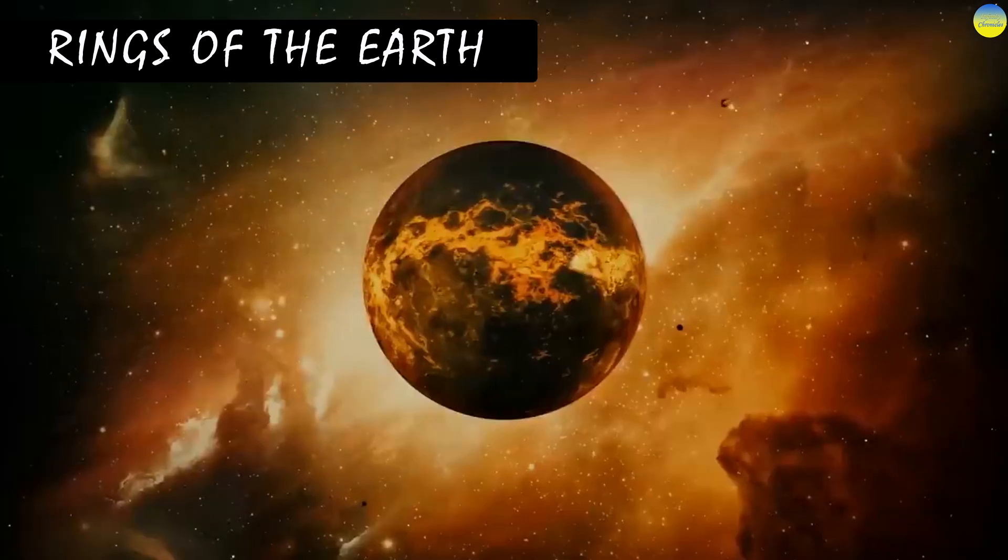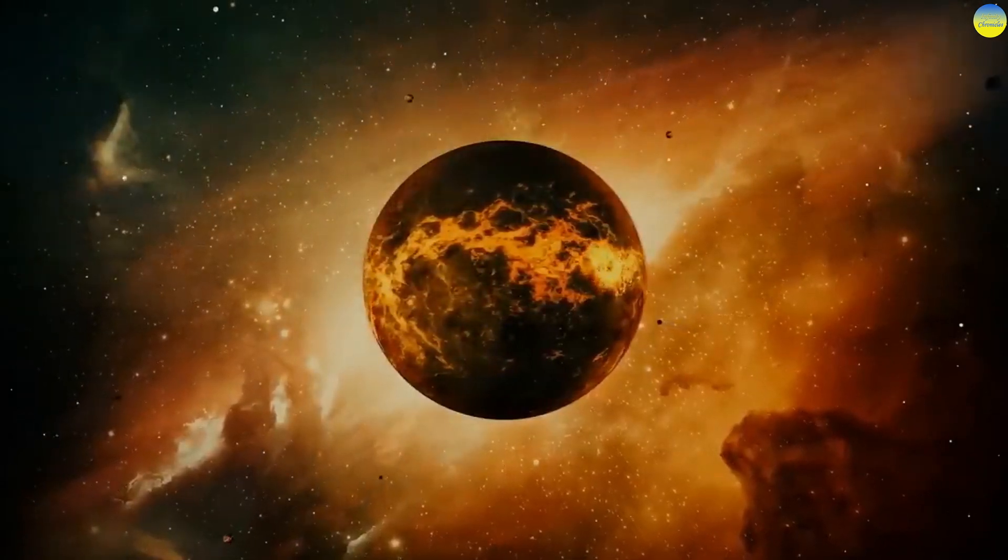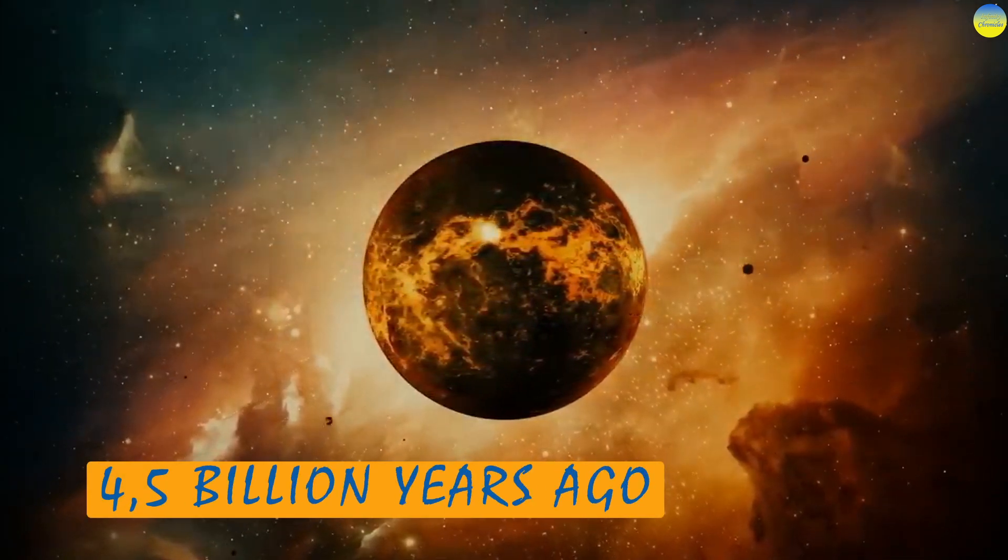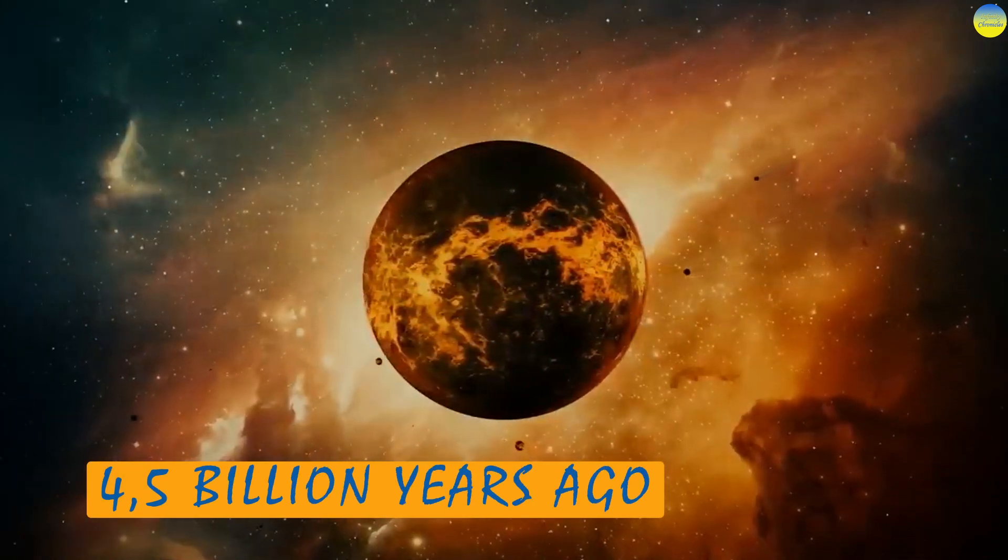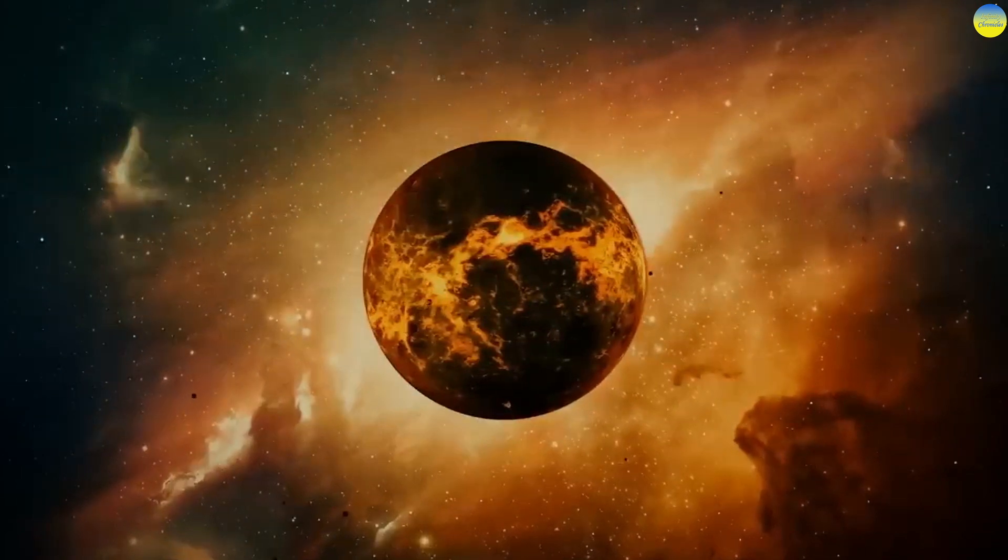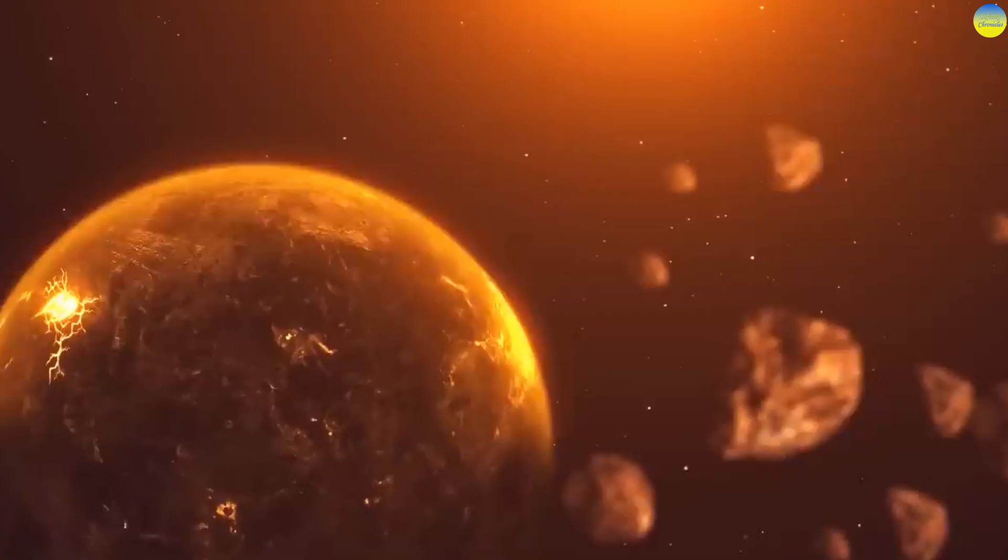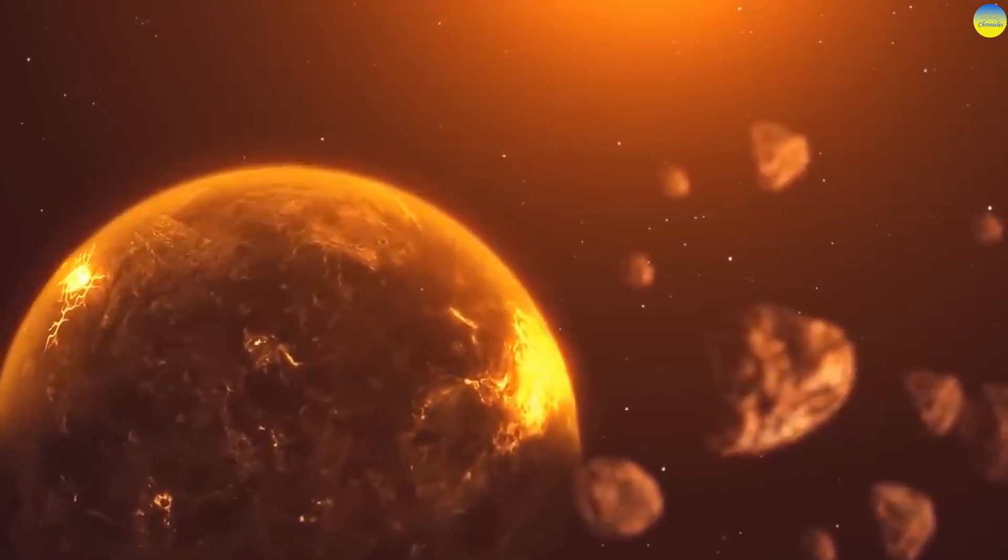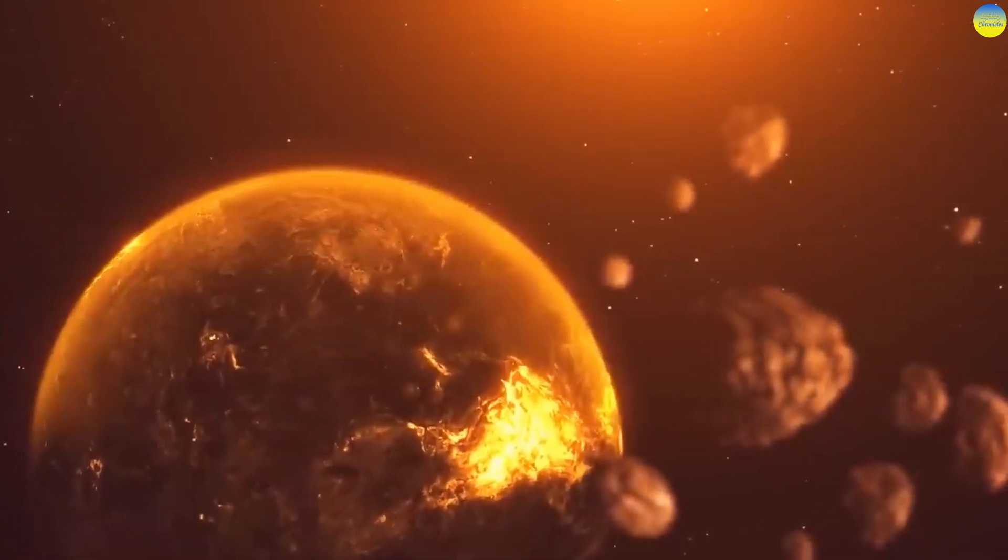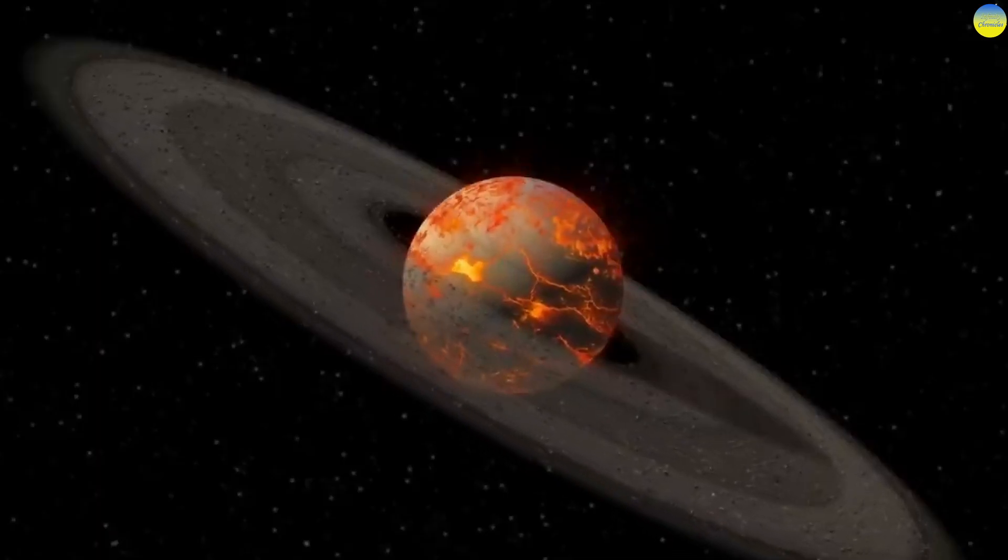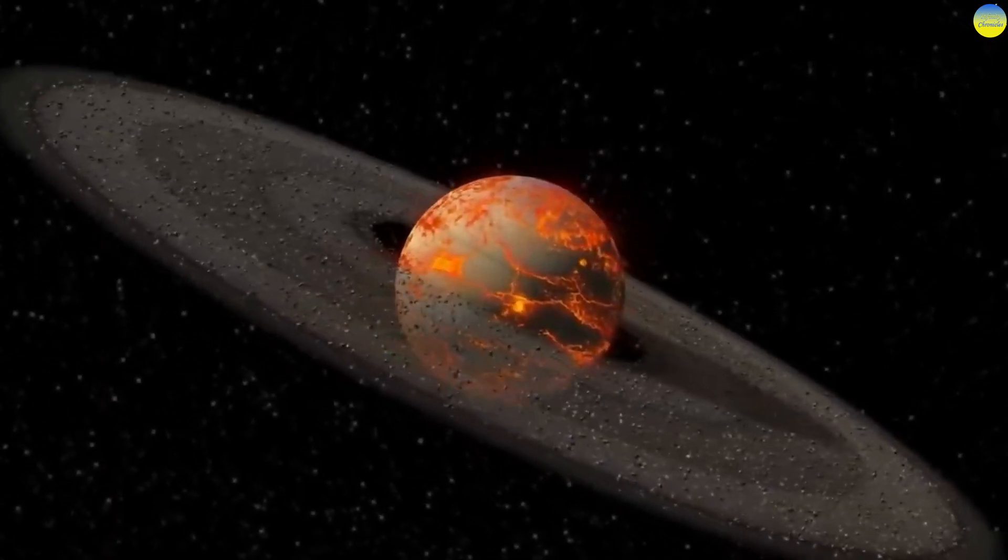Rings of the Earth. According to the most popular hypothesis of the Moon's formation four and a half billion years ago, the planet Theia, descending from the Lagrange point L4 of the Earth's orbit, collided with the proto-Earth. The collision caused a large amount of matter to be released into the Earth's orbit, which formed a ring that eventually merged due to gravity and created the Moon.